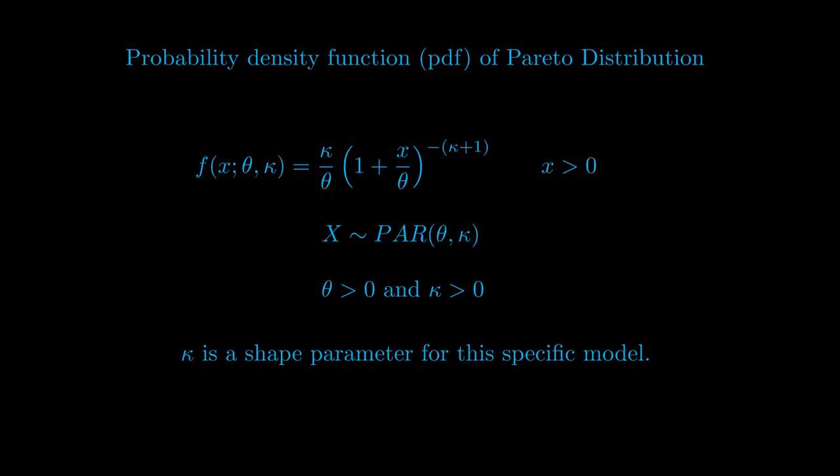First, you need to know the pdf of a Pareto distribution, which is designated by that formula. Theta is greater than zero and kappa is greater than zero, where kappa is the shape parameter for the specific model.